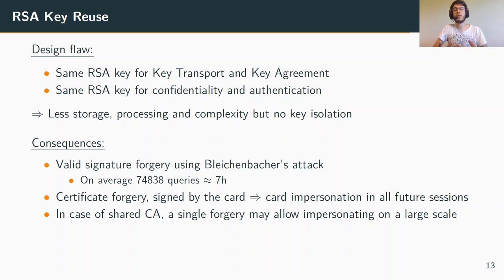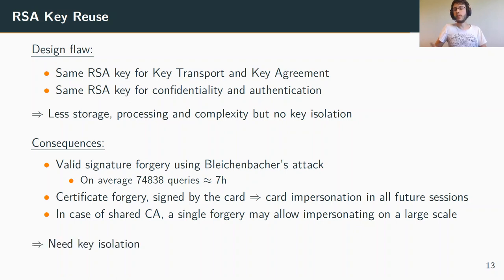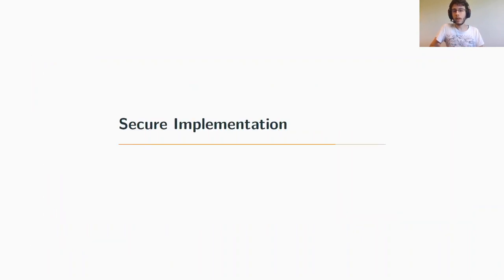Forging a signature is slightly harder than simply decrypting a message since there is an additional step at the beginning of the attack. It took on average seven hours to forge a valid certificate, which can also be split across multiple sessions. Considering the outcome — card impersonation at large scale — it becomes a very significant result. The mitigation here would be to isolate key usage, at least between confidentiality and authentication.